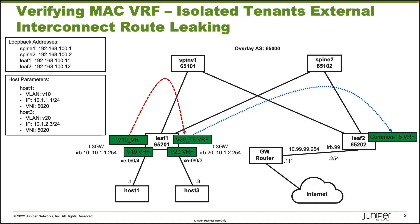leaf 1 and leaf 2, which are all part of the IP fabric in our data center. The spine devices are acting as spines, the leaf devices as leafs. We have a gateway router with connectivity to the internet connected to leaf 2, and host 1 and host 3 connected to leaf 1. Host 1 uses VLAN v10, IP address 10.1.1.1, and VNI 5020. Host 3 uses VLAN v20, IP 10.1.2.3, and VNI 5020 as well.